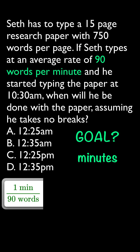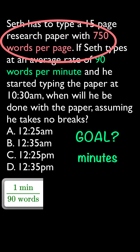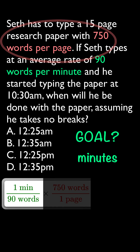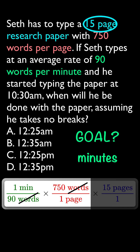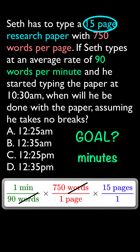We need to get rid of the word 'words' in our dimensional analysis. Looking back at our problem, it says 750 words per page, so we write 750 words over one page — words cancel out. Now we need to get rid of 'page' just like we got rid of 'words.' Notice 15 pages represents Seth's one research paper, so pages cancel out.